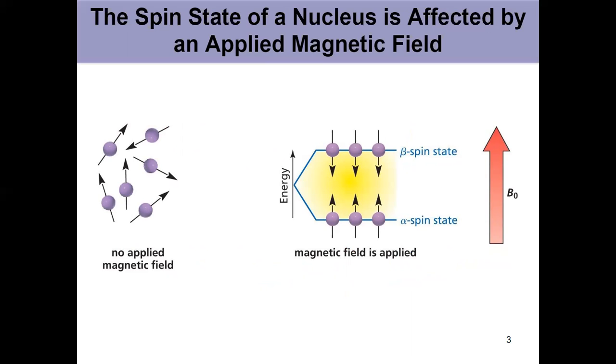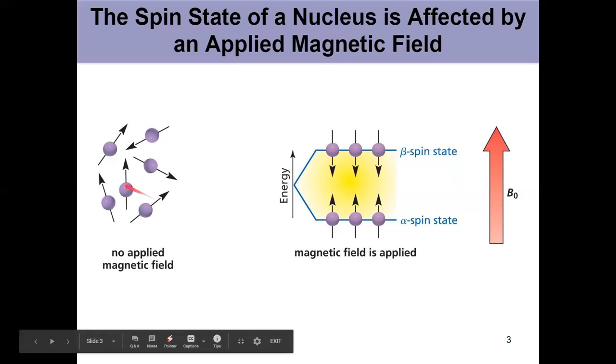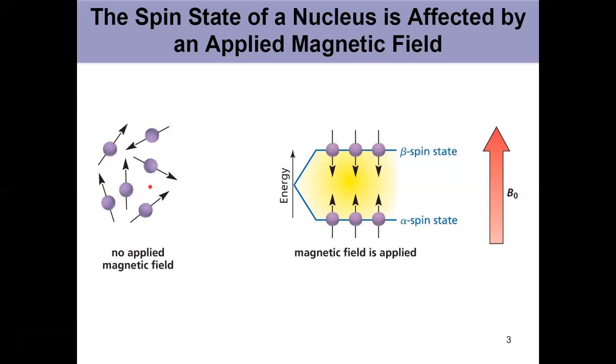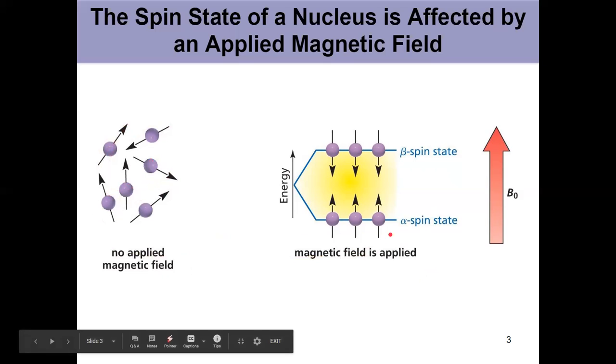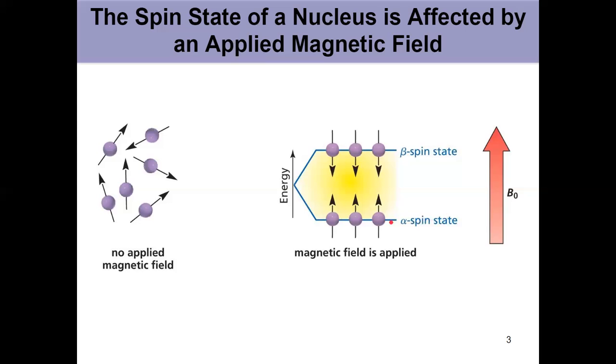Because a nucleus has a charge and it's spinning around, it has a magnetic moment and therefore generates its own magnetic field. In the absence of any applied external magnetic field, the magnetic moments of those nuclei are kind of just shooting all over the place, randomly oriented. But if we use a magnet to apply a magnetic field, we can get these into a more organized state. They can either be aligned directly with the magnetic field, that's called the alpha spin state, or against the magnetic field, that's called the beta spin state.